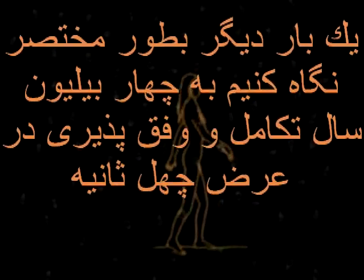Many collateral branches of the human family became extinct in the last few million years. We, with our brains and our hands, are the survivors. There's an unbroken thread that stretches from those first cells to us. Let's look at it again, compressing 4 billion years of evolution into 40 seconds.